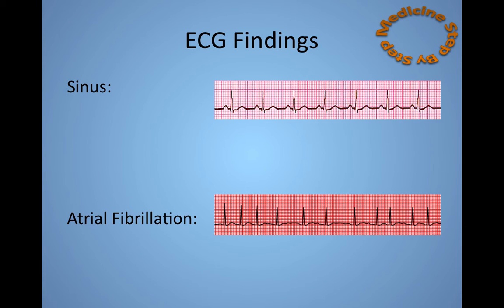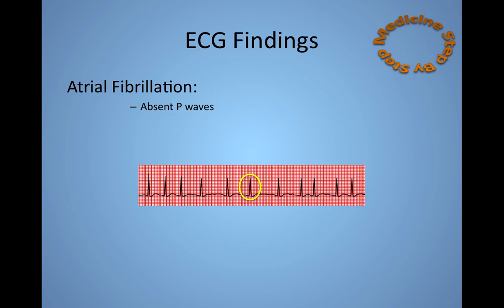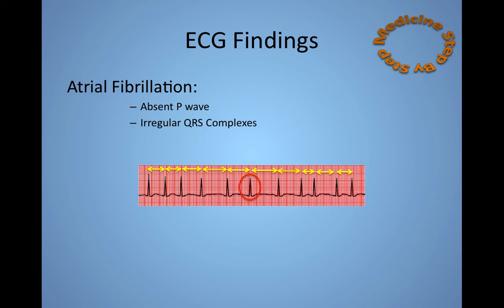An ECG showing atrial fibrillation is different, as can be seen here. There is no P-wave before the QRS complex. As an example, I've circled a QRS complex here — there is no P-wave that can be seen prior to the complex. There are also irregular QRS complexes, as seen by the different length arrows representing the R-R interval.